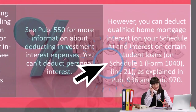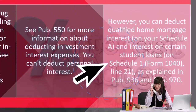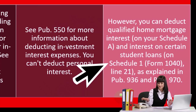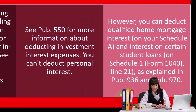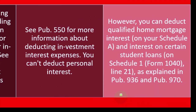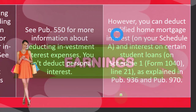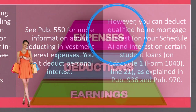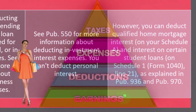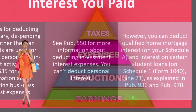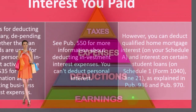You can deduct qualified mortgage interest on your Schedule A, and interest on certain student loans on Schedule 1. Student loan interest is an above-the-line deduction, so even if you're not able to itemize, you might be able to take that. We're talking here about itemized deductions, which means you have to clear the standard deduction to take them.